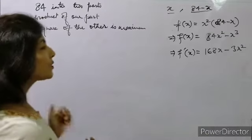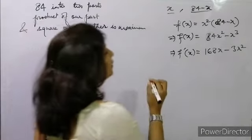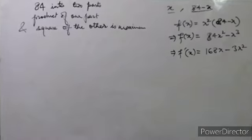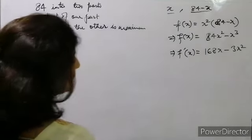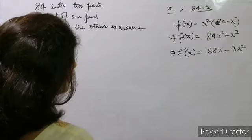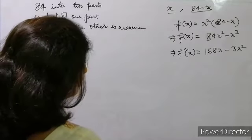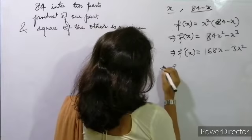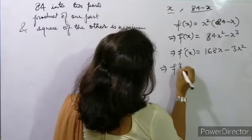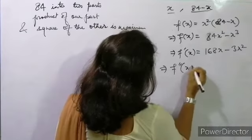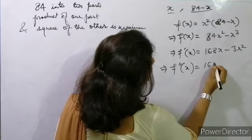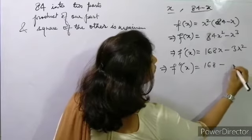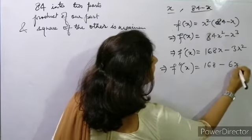We also find f''(x). f''(x) = 168 - 3×2·x = 168 - 6x.